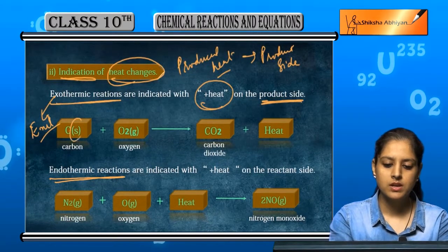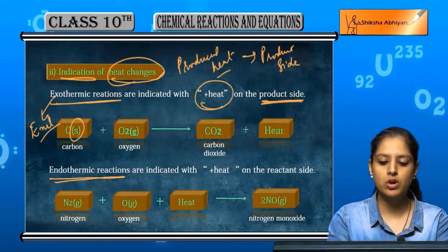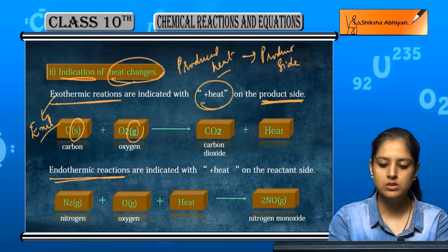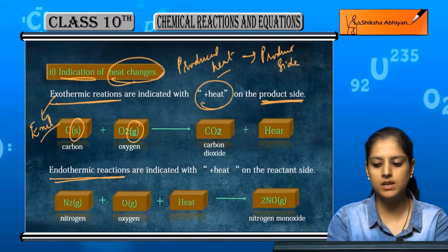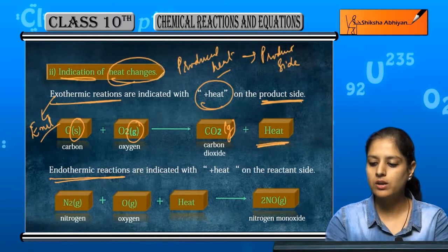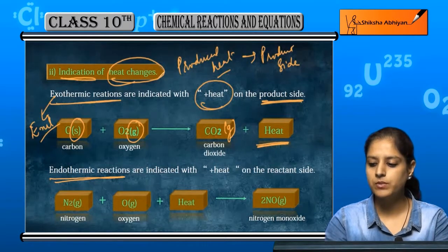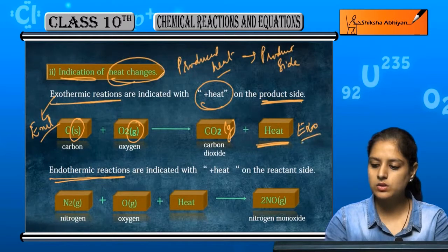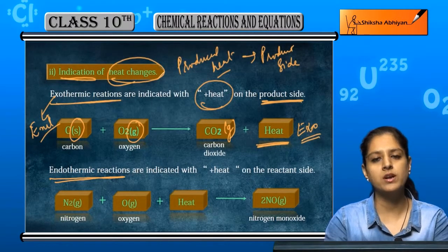So carbon, we have written S because it is solid, plus oxygen, so we have written G for its state. Then we get CO2, that is a gas, and heat. Plus heat, because it is an exothermic reaction, so we will write it on the product side.